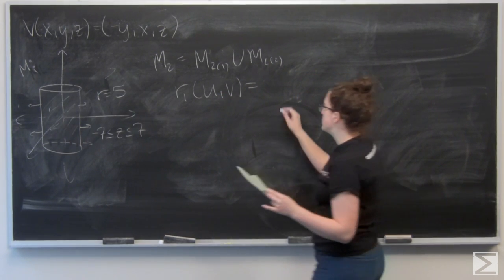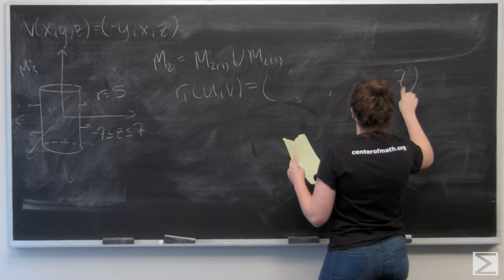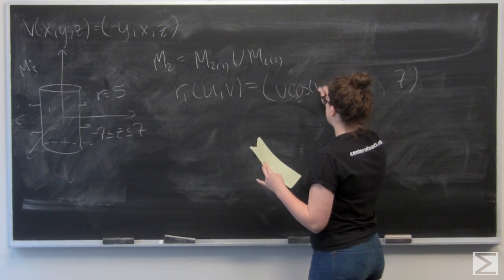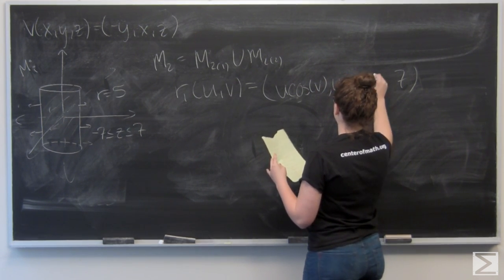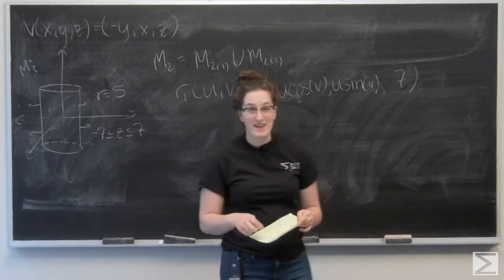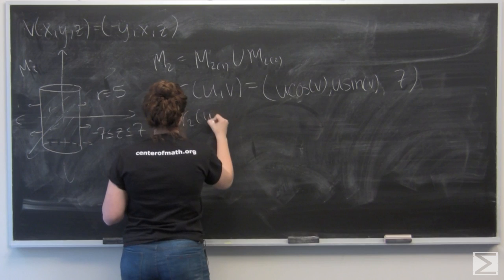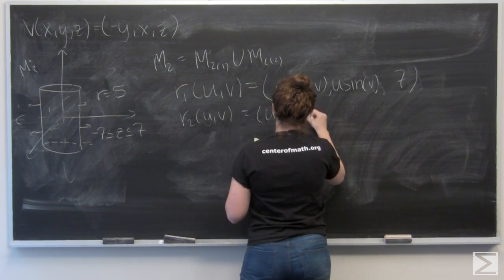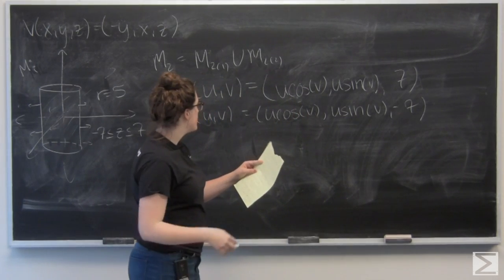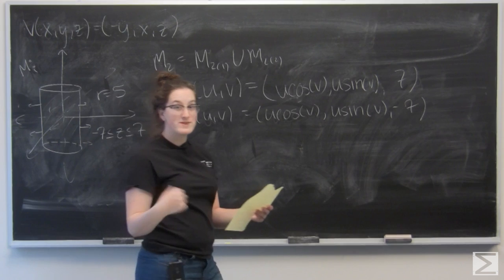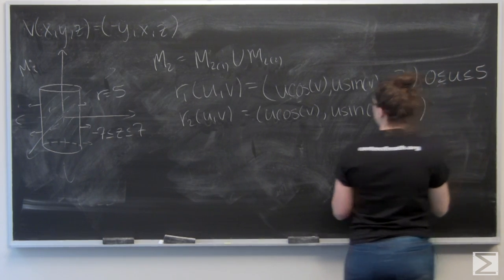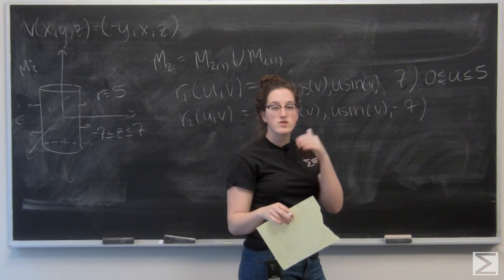I want to make a circle, so I'll assign U to be the radius and V to be theta, giving me U cosine V, U sine V, 7. Now I want to parametrize the bottom, which is almost exactly the same but with the K component changed to negative 7. The radius of the cylinder is 5, so U goes between 0 and 5, and since the cylinder goes all the way around, V goes between 0 and 2π.